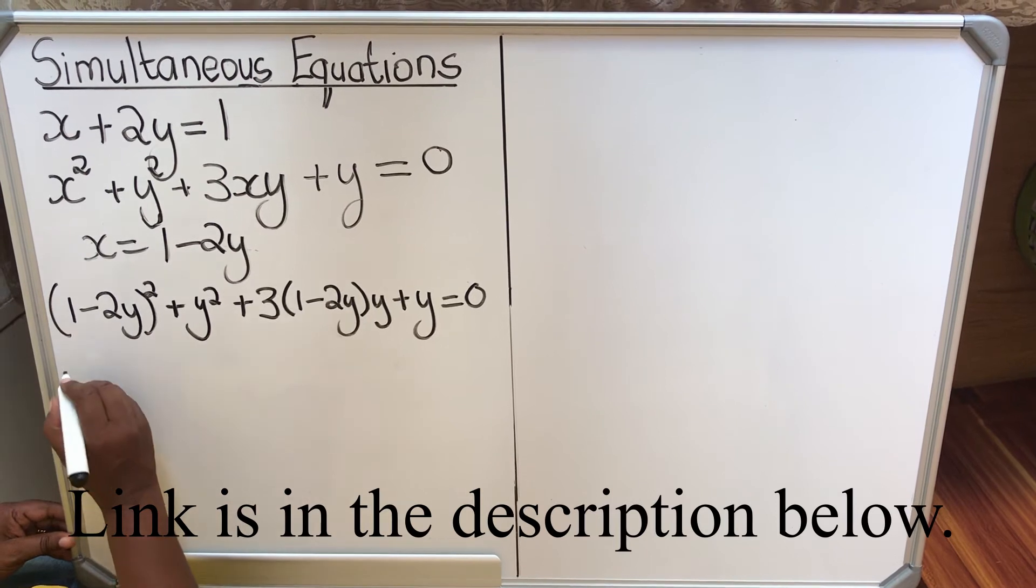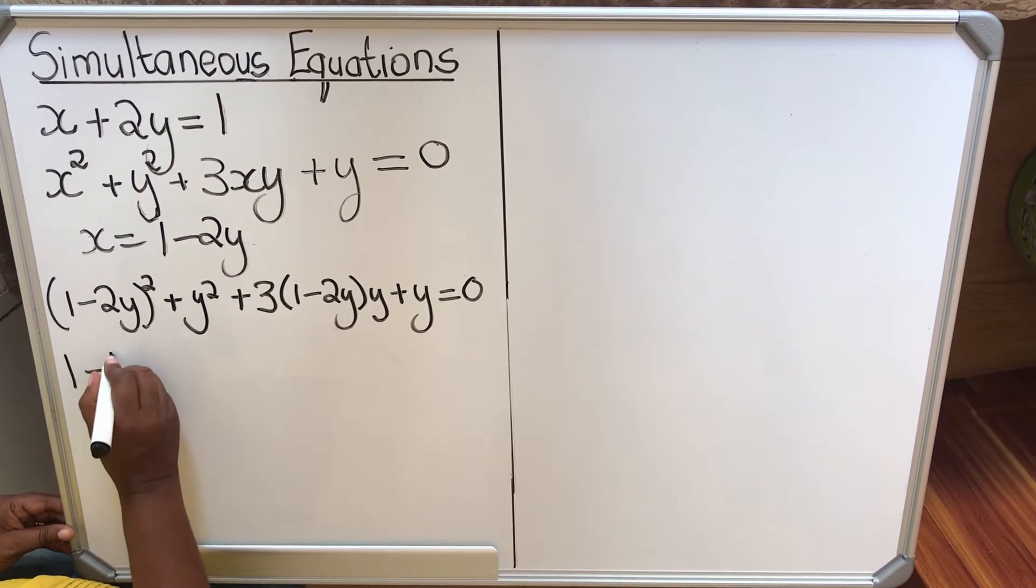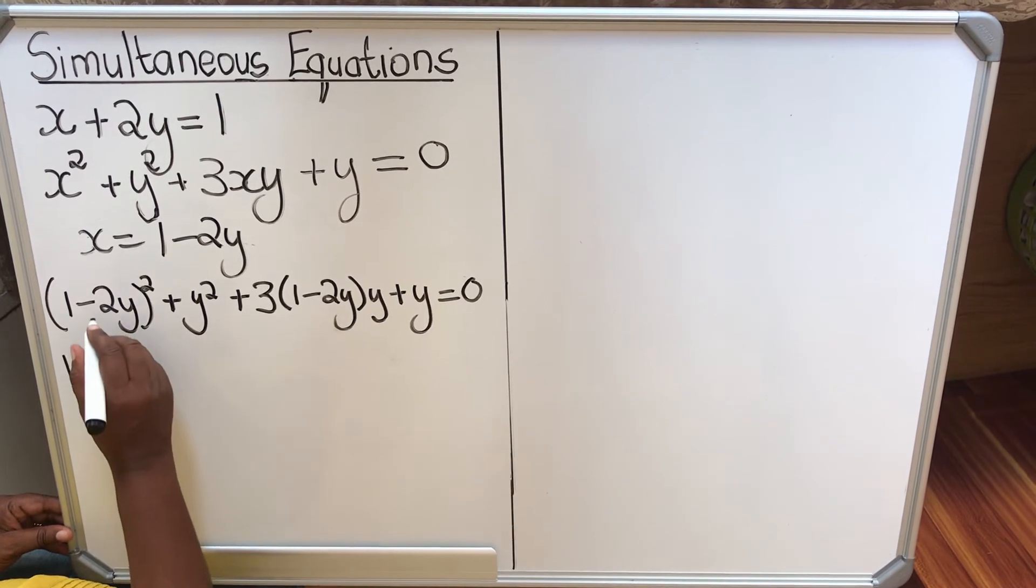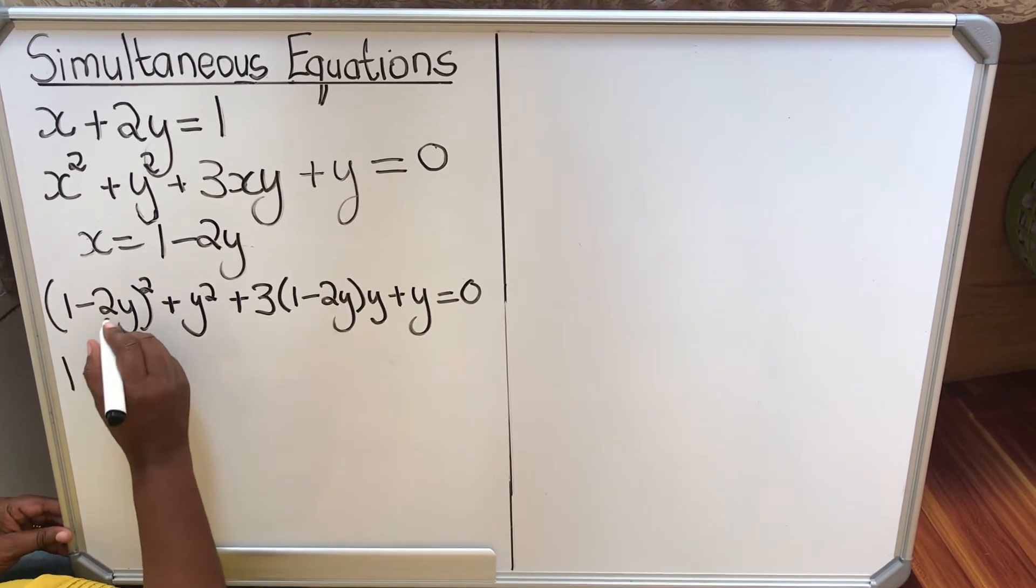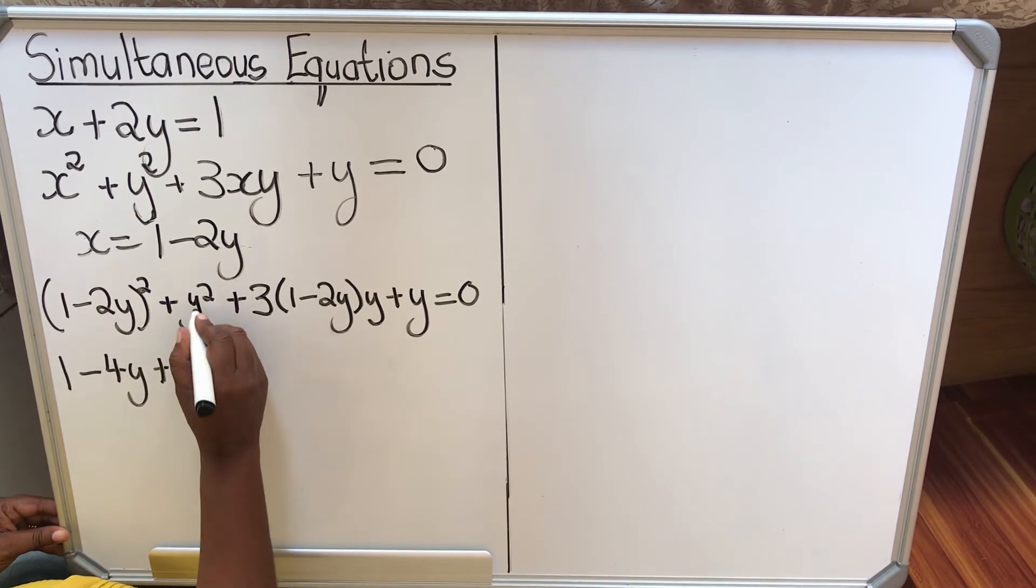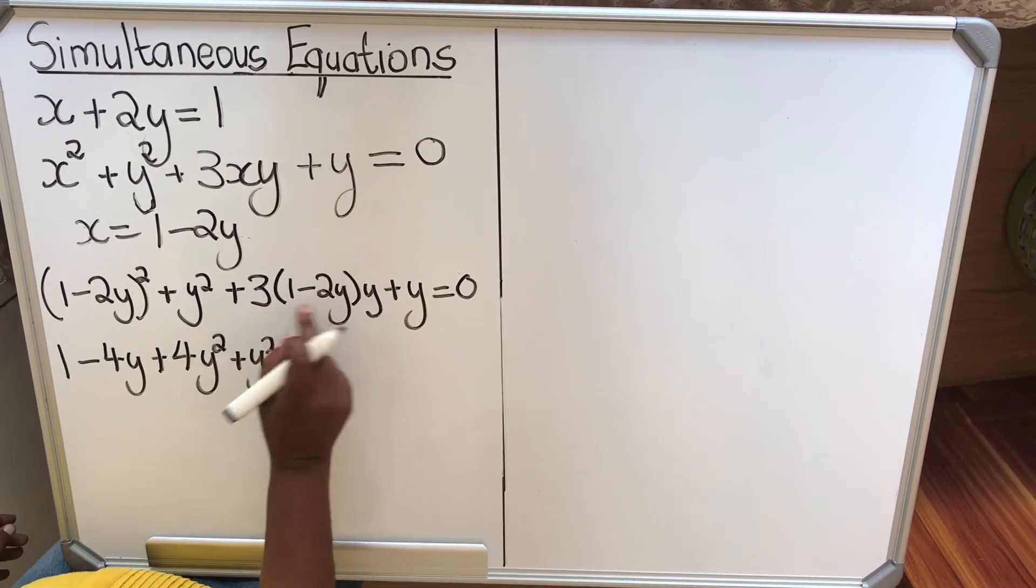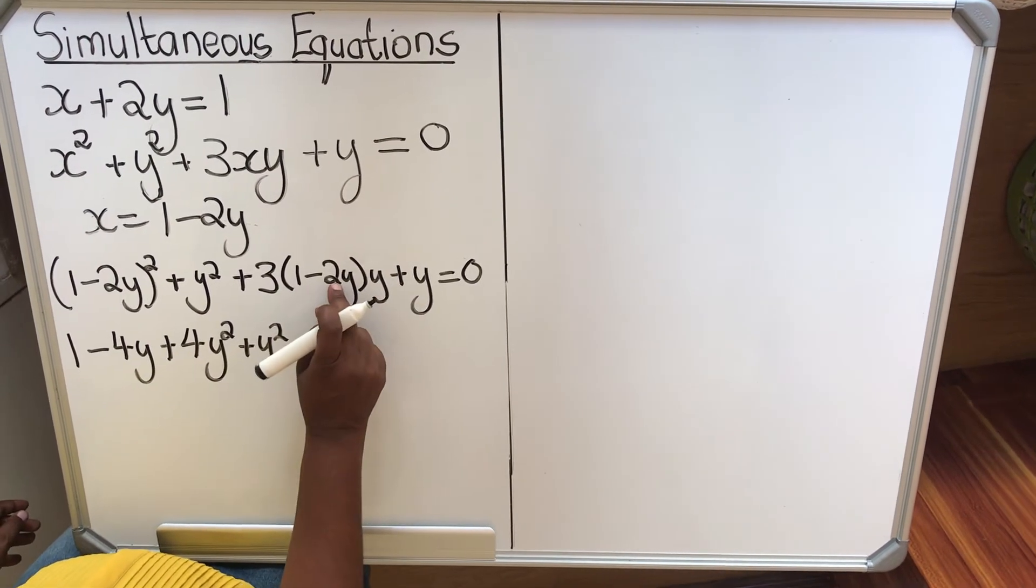First times first, 1 times 1 is 1. 1 times minus 2 times 2, we get minus 4y. And the negative term, negative times positive, 2 times 2, 4y times y, y squared. Then you add that y squared. Now in this case we have two factors. We have a 3 multiplying the bracket and a y multiplying the bracket.